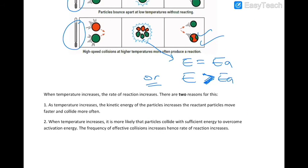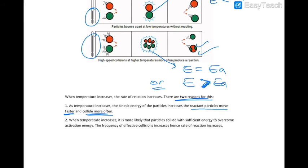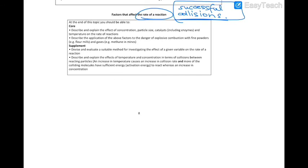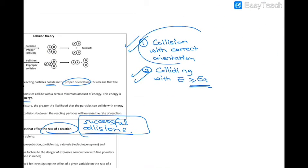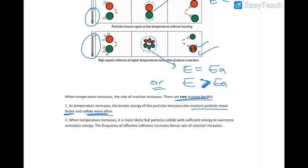When temperature increases, there are two reasons the rate increases. First, the kinetic energy of particles increases, so reactant particles move faster and collide more often — the frequency of collisions increases, leading to more successful collisions in proper orientation. Second, the particles collide with sufficient energy to overcome the activation energy. So both factors — more collisions and higher energy — contribute to a faster reaction rate.